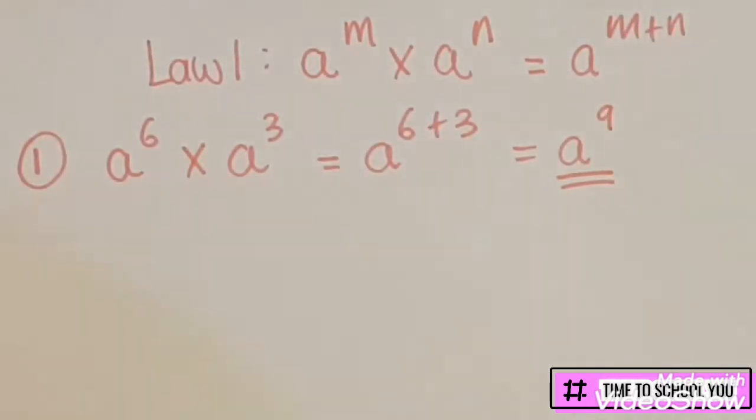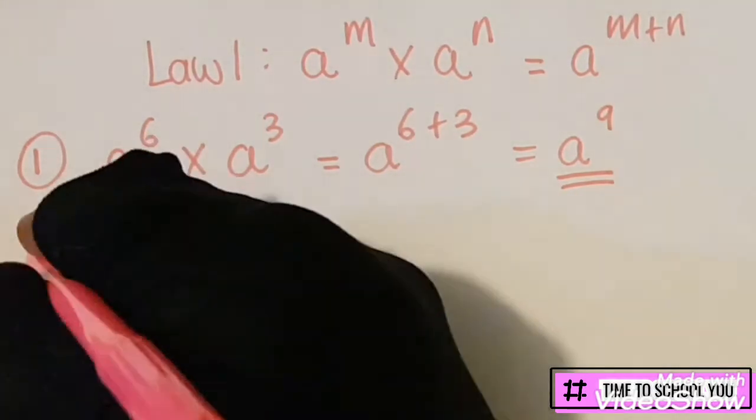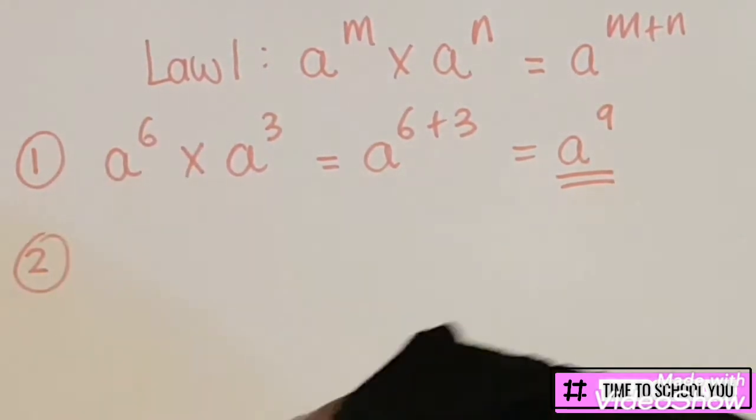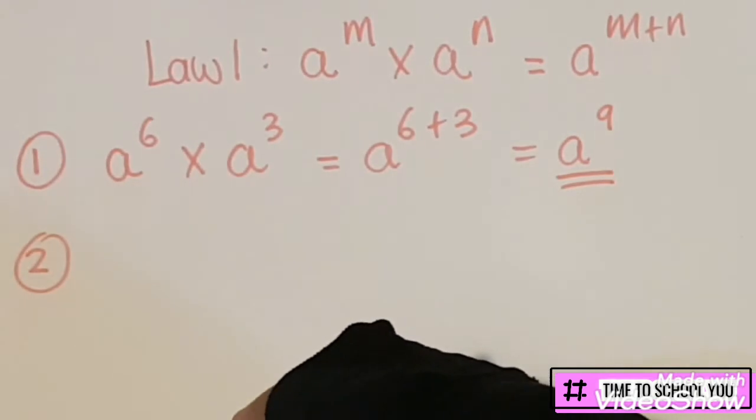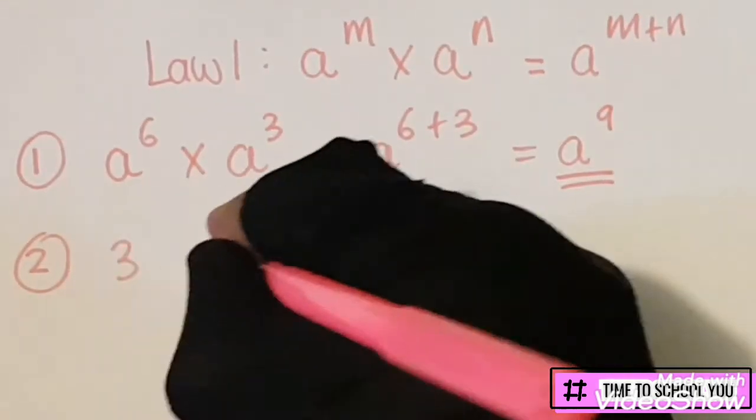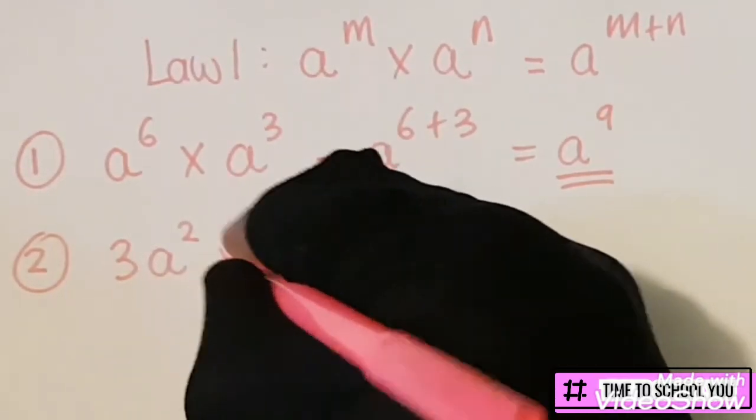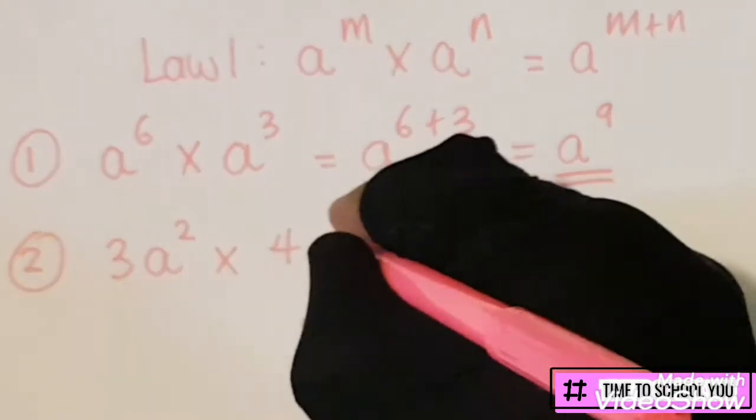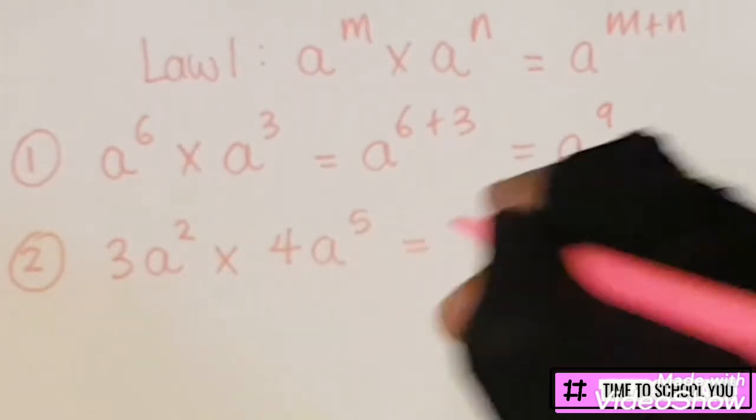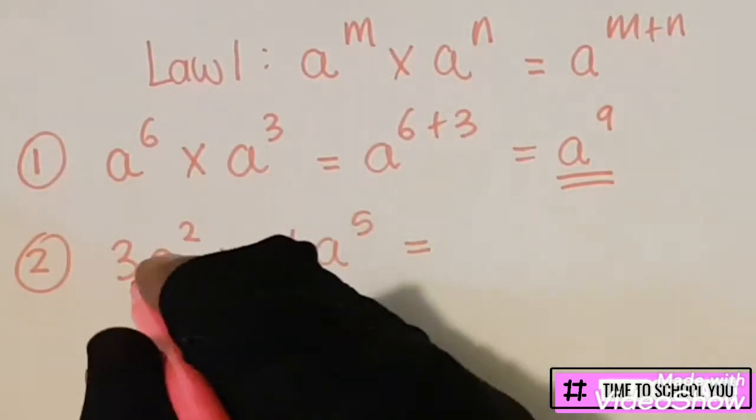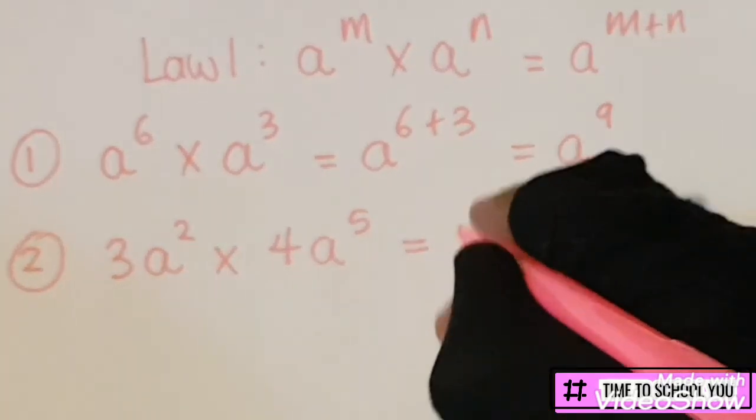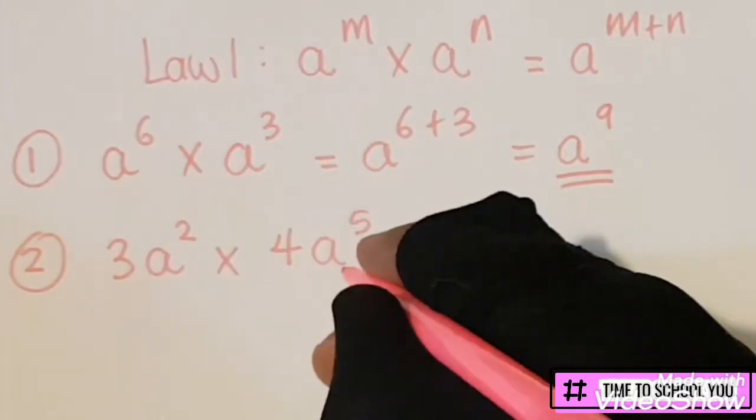Now we get the second type where we get numbers mixed between. So you'll get 3a^2 times 4a^5, and we multiply the numbers through first. Three times four is 12, and a times a, we add the exponents, so it'll be a to the power 7.